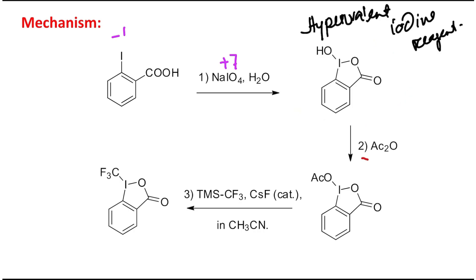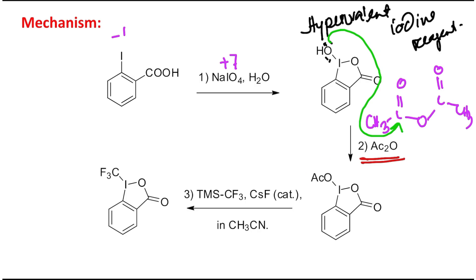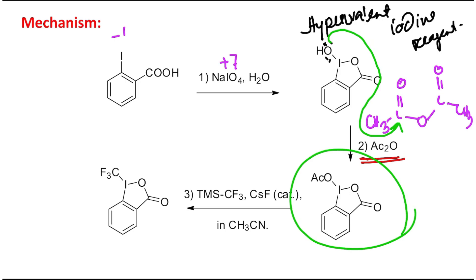In the next step, the reagent is acetic anhydride and the product is an acetate. The alcohol here acts as a nucleophile and converts the OH into an acetate. Generally, a base is used for this purpose, but in this example it is not mentioned. Base is required because it helps to abstract the proton so that the reaction proceeds in the forward direction smoothly. So this step is acetylation.